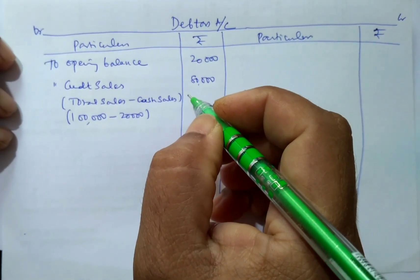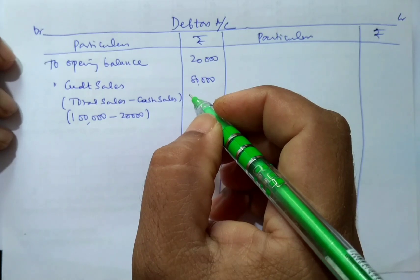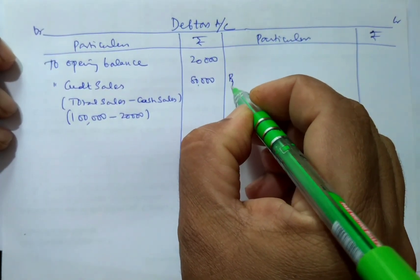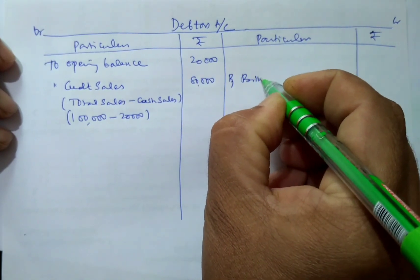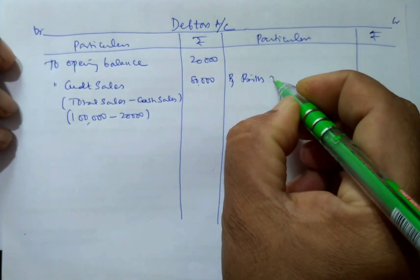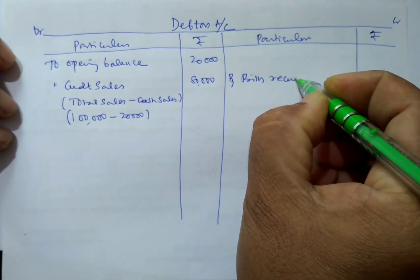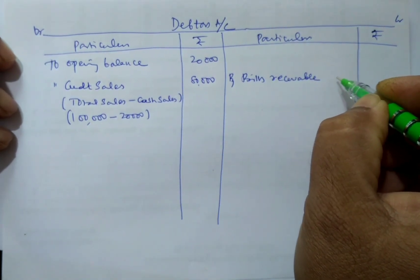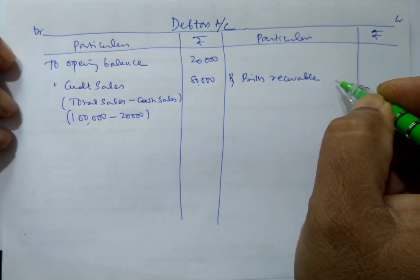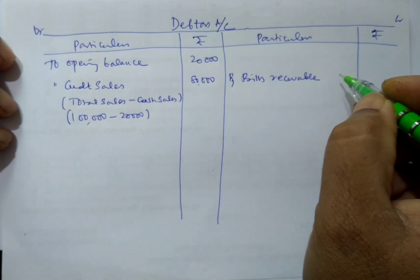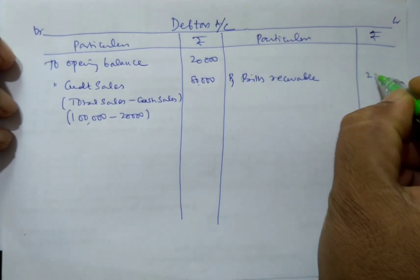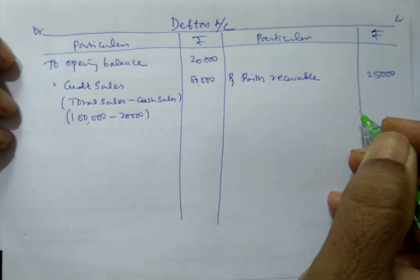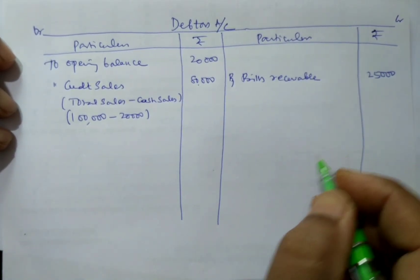Next, in this problem, they have given bills receivable received during the year. I'll take it by bills receivable account. This amount is transferred from bills receivable account, so it is Rs. 25,000.